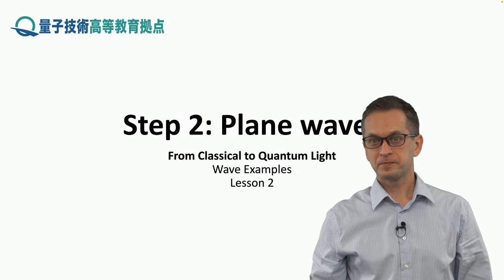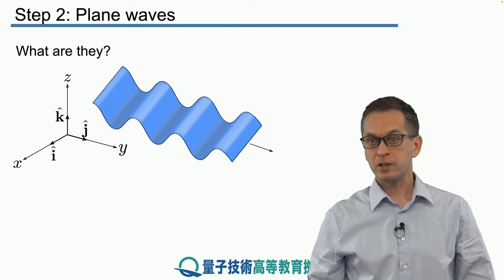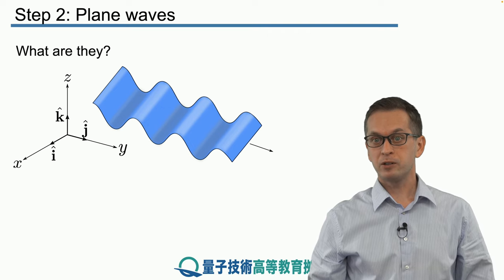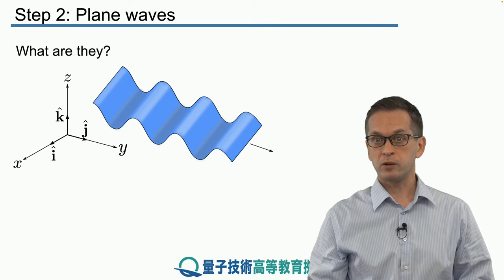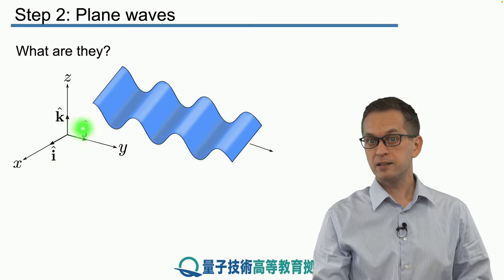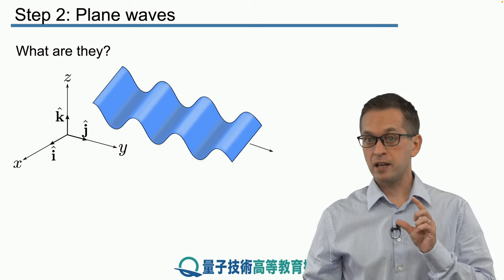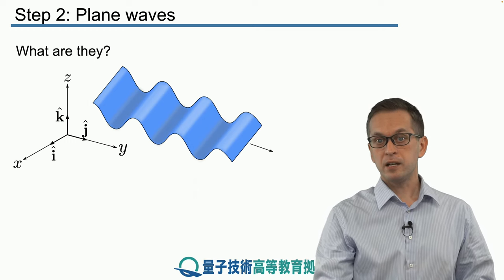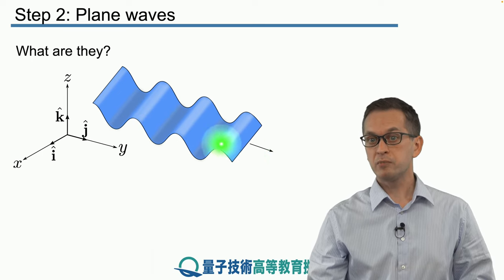Step two: plane waves. This is our first example in 3D. So instead of having just an x for our spatial coordinate, we're going to have three coordinates x, y, and z, and there will be a lot of vector notation. The unit vector along the x direction is given by i-hat, along the y direction by j-hat, and along the z direction by k-hat. These hats mean that they are vectors with unit length. Here we can see our example of a plane wave traveling along some direction given by vector k.